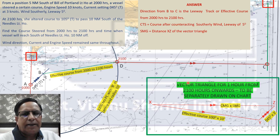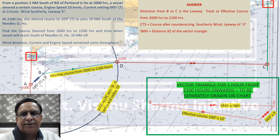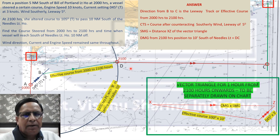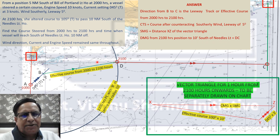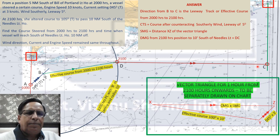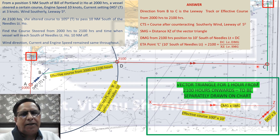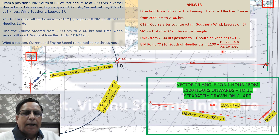The speed made good by the vessel is obtained from the vector triangle and equals XZ. The distance to make good to reach point C — 10 miles south of the Needles Light — is represented by DC from the 2100-hour fix. The ETA at point C equals 2100 hours plus the steaming time thereafter, which is distance DC divided by speed made good XZ.